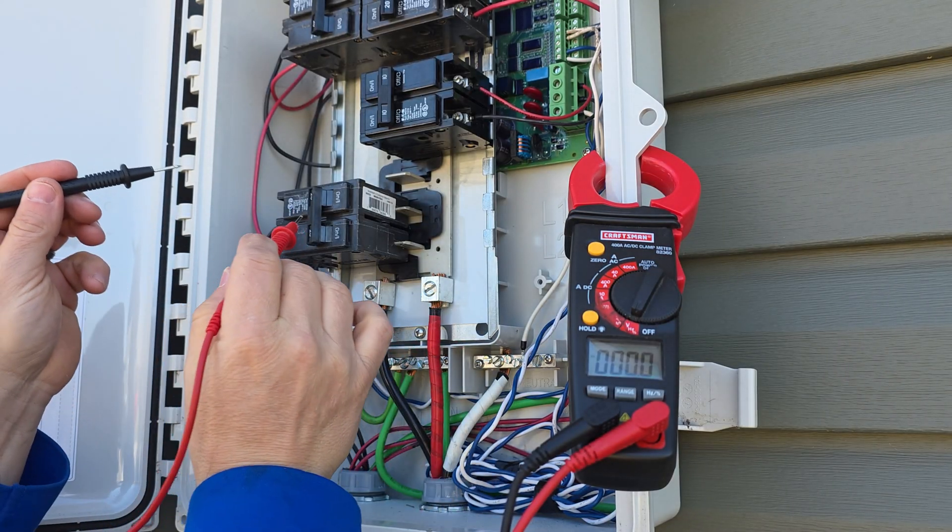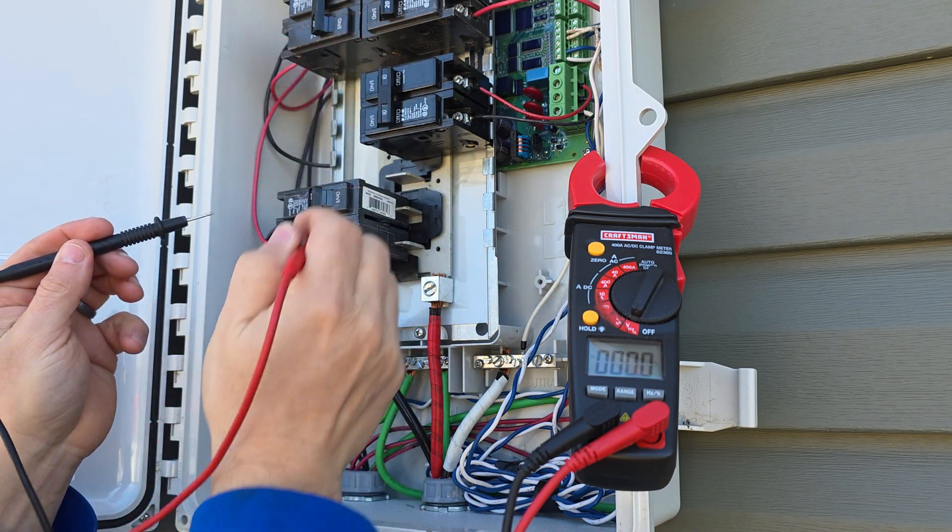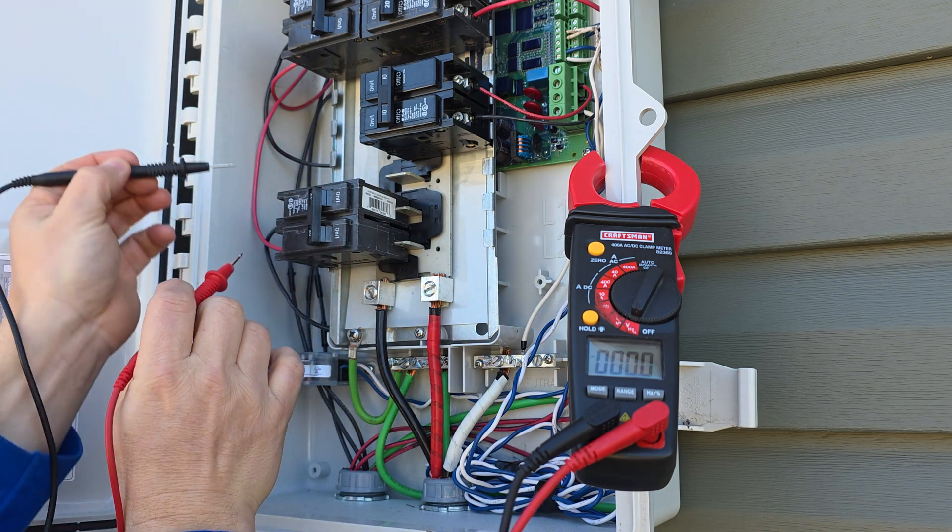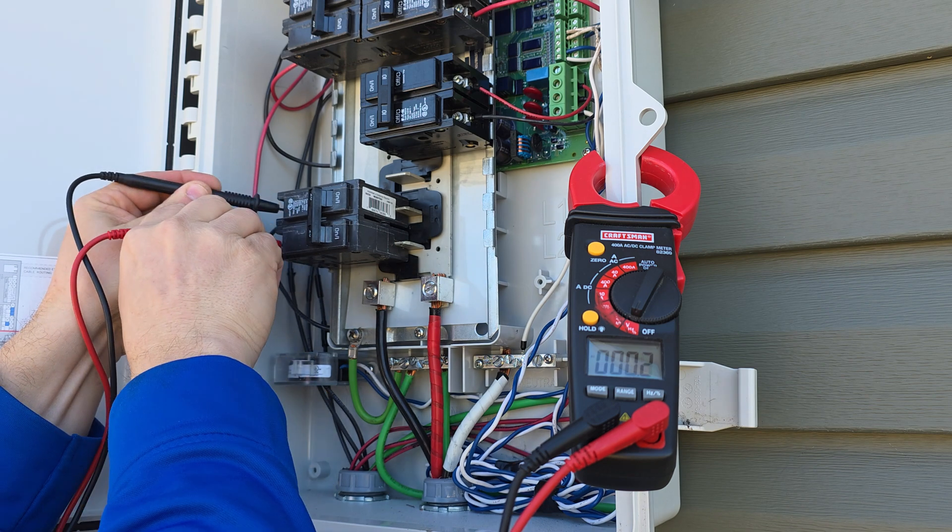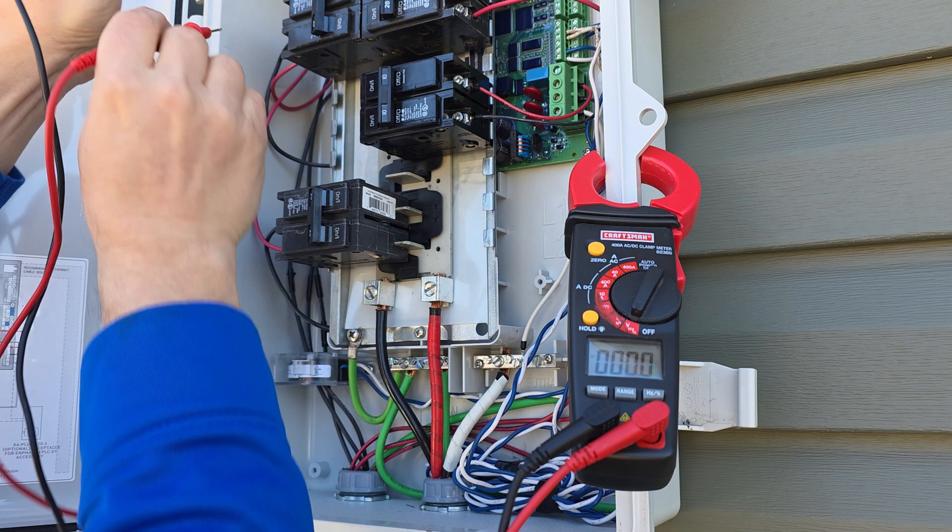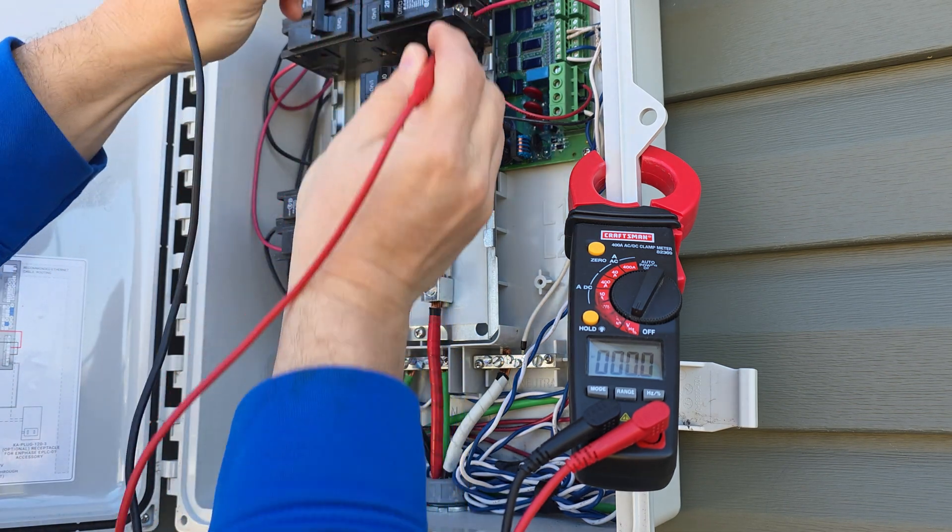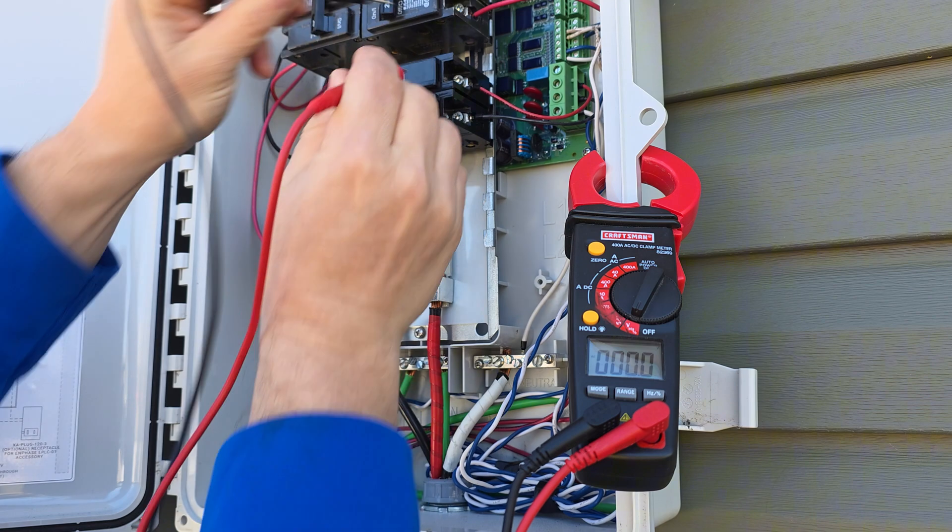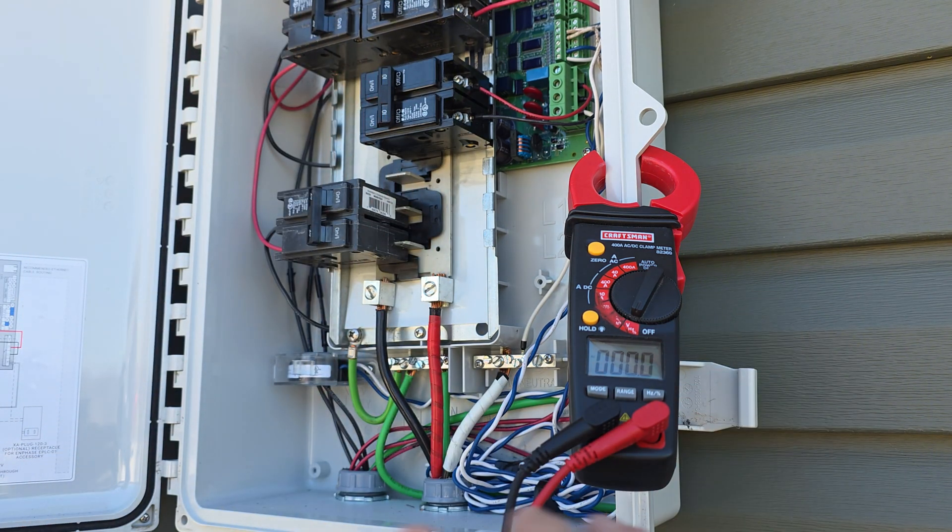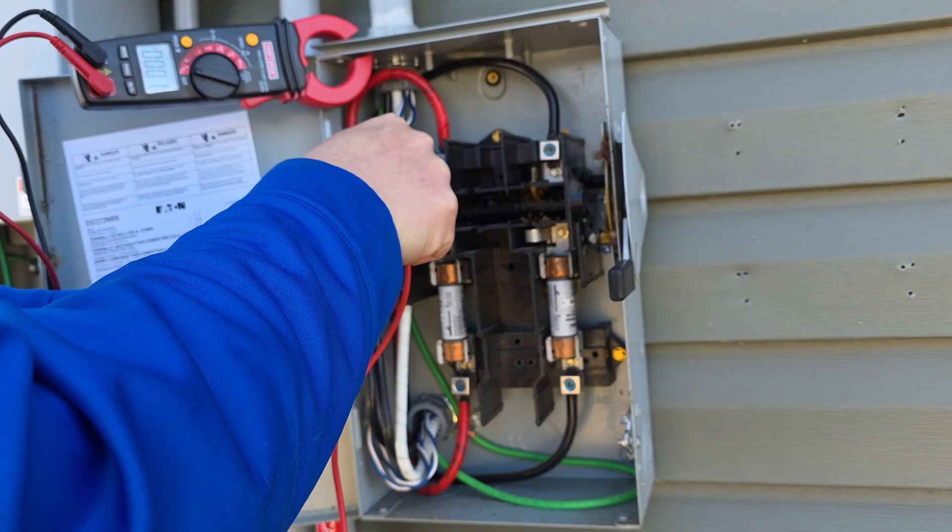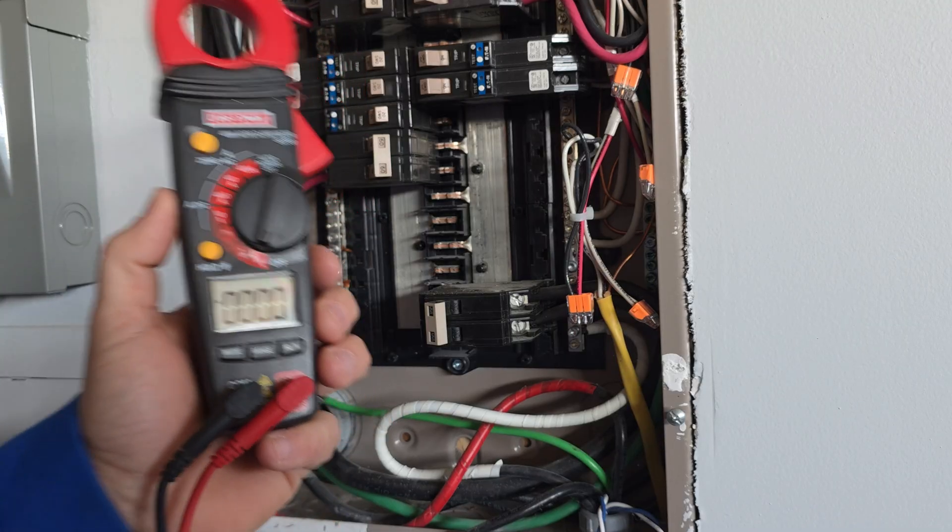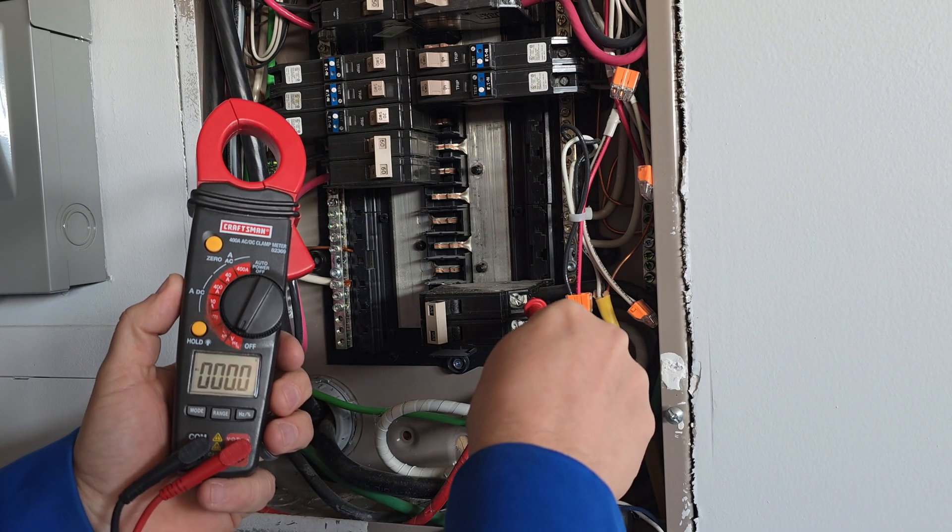Before we do anything, we want to make sure to check the circuits for each one of these branches coming off the roof to ensure that the rapid shutdown is working correctly. So we have no voltage there, no voltage there, and no voltage there. This one should not have anything. So all the power is off to everything in here. We're not getting any reading on that. So we're safe to work in these panels because if we did have a reading, it would show something like this.